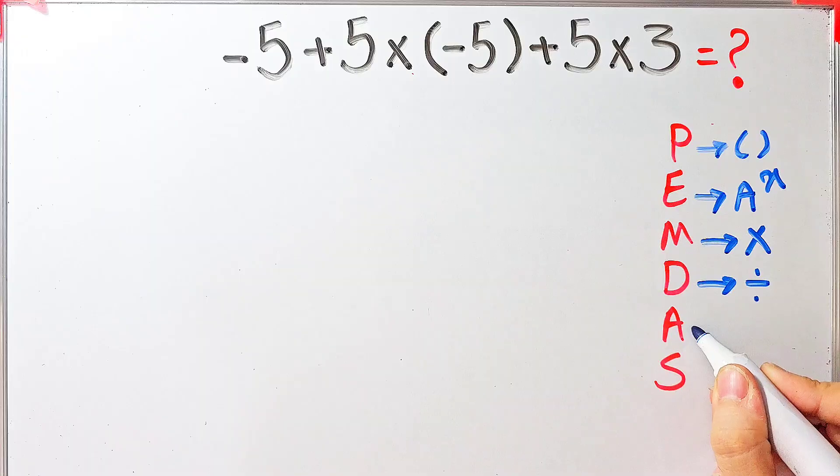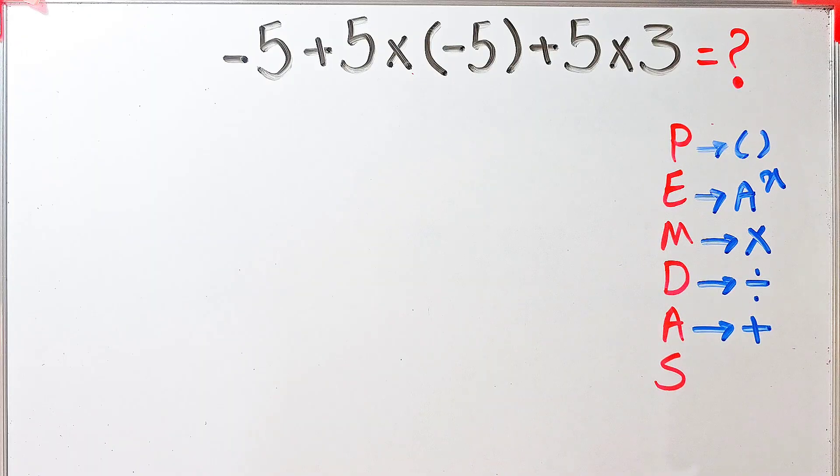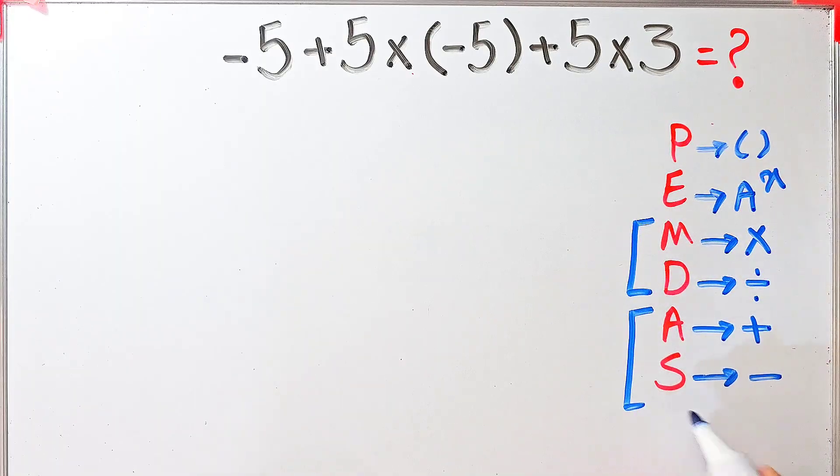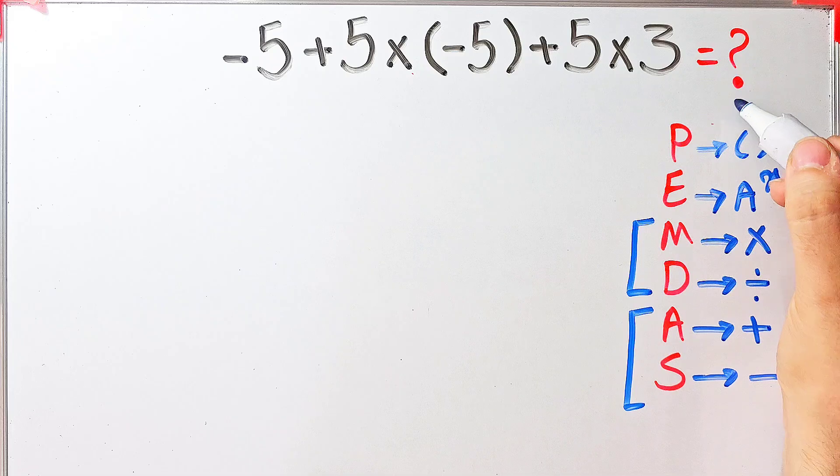Multiplication and division are the same level of priority. Also, addition and subtraction are the same level of priority. When we have both in an expression, we start from the left and simplify the question.